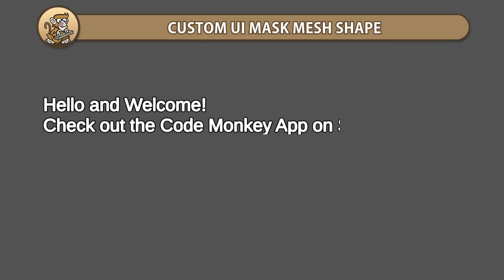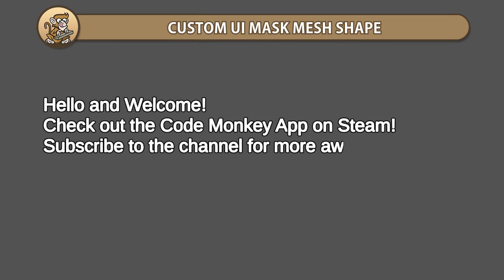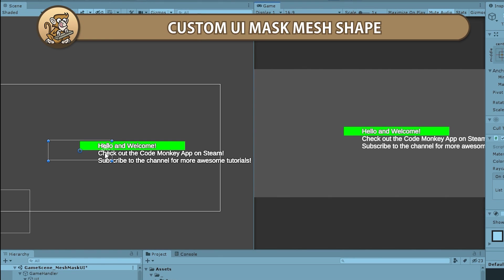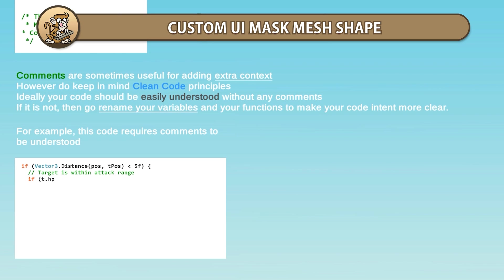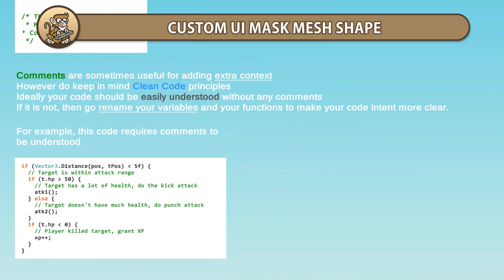In this video we're going to learn how to make a custom UI mesh mask. This way we can make a mesh out of any shape and mask out multiple parts of our UI while using just a single mask. Let's begin!